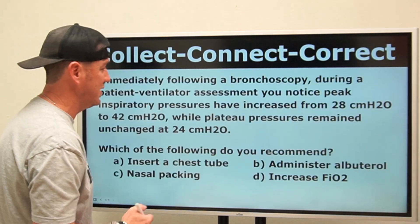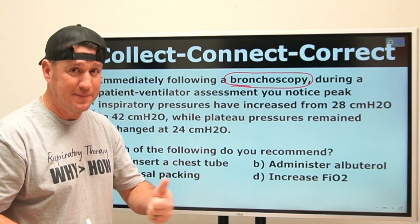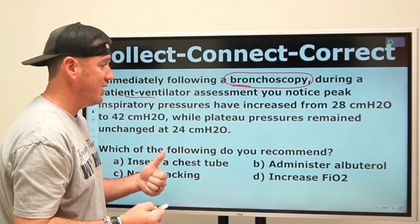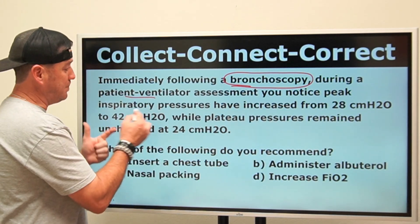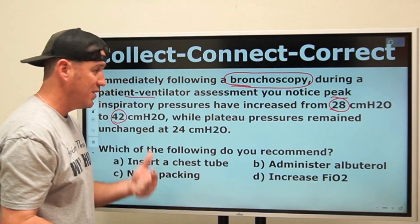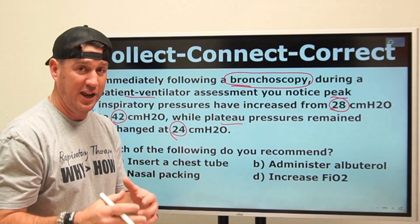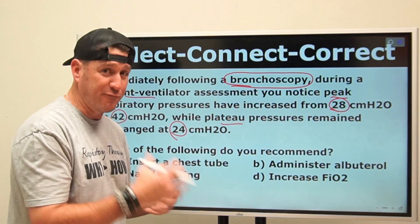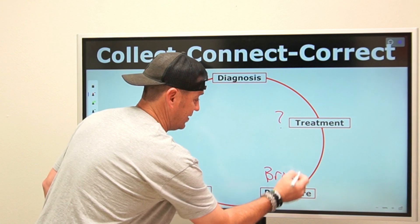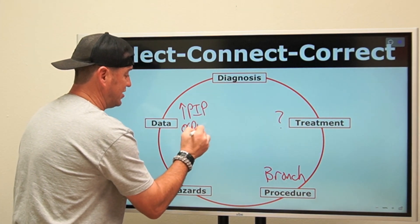Bronchoscopy is a key piece to collect — that's number one. I also know the patient is on a ventilator because we're doing a patient ventilator assessment. So: bronchoscopy during mechanical ventilation. Peak pressures have increased from 28 to 42 centimeters of water pressure — that's data. And plateau pressures have remained unchanged. Now I've collected my information and I can work with it.